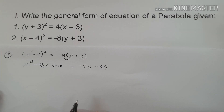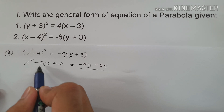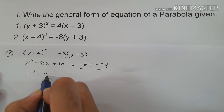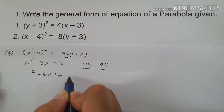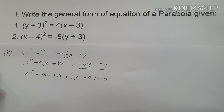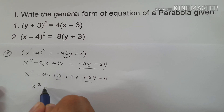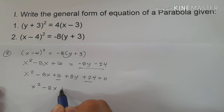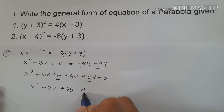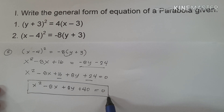To make this equation a general form, we transfer -8y - 24 to the side of x² - 8x + 16. So we get x² - 8x + 16; from negative it became +8y, and +24, equals 0. Combining like terms 16 and 24 gives 40: x² - 8x + 8y + 40 = 0. That is the general form of the equation of a parabola.